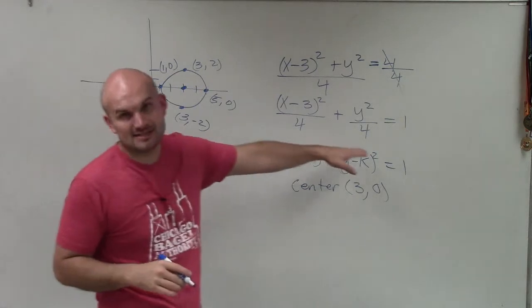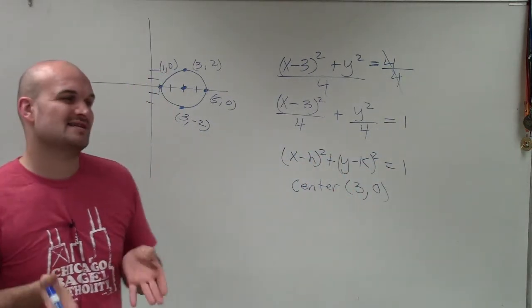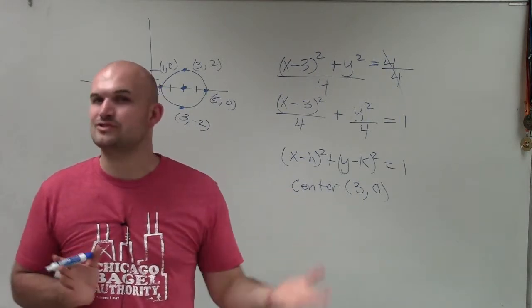If we are going to go ahead and subtract these, define c squared, as far as our foci, we notice our foci are 0. And that's going to be something we're going to talk about when we get into eccentricity and so forth.